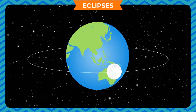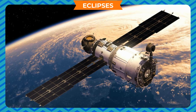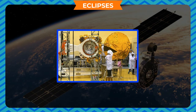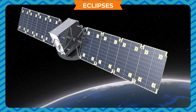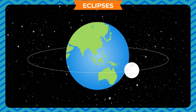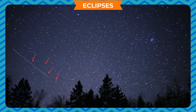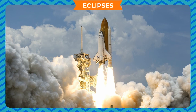A satellite is an object that moves around a planet. Apart from the natural satellite of the earth like the moon, some artificial satellites are also present in outer space which are man-made. They too reflect the sunlight and are used for different purposes. Like the moon, these satellites also revolve around the earth in fixed orbits and are visible on a clear night sky.